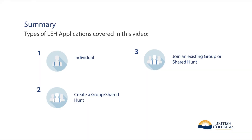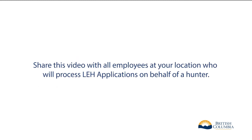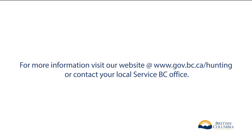This video contains instructions to complete three types of LEH applications on behalf of a hunter at your location. These types of applications include: Individual, Create a group or shared hunt, or Join an existing group or shared hunt. Share this video with all employees at your location who will process LEH applications on behalf of a hunter. For more information, visit our website at www.gov.bc.ca/hunting or contact your local Service BC office.